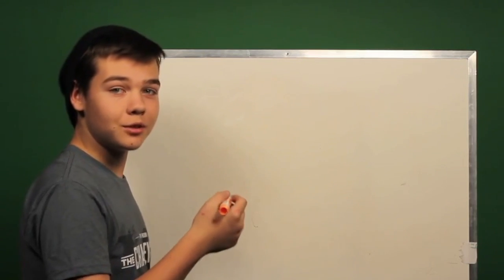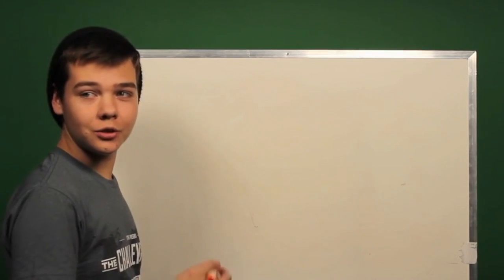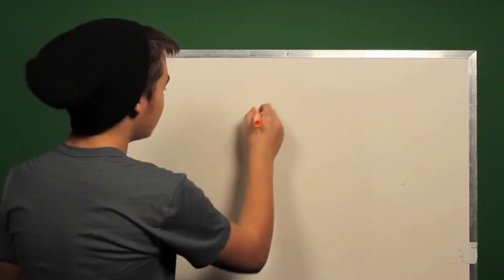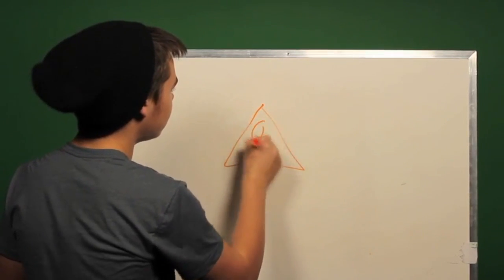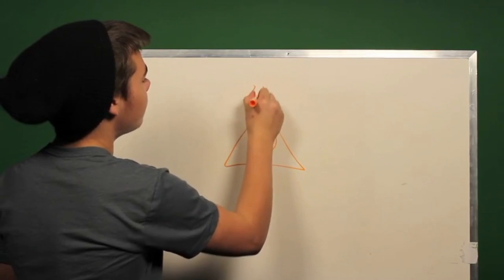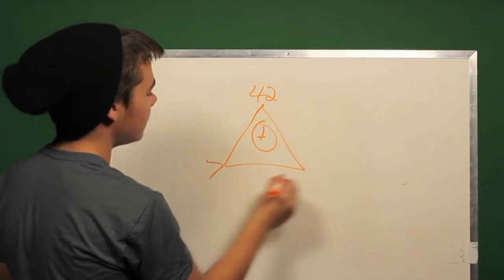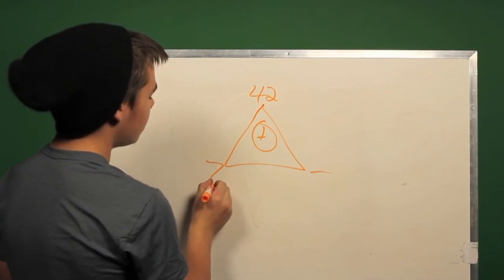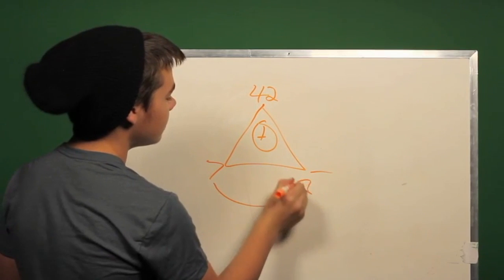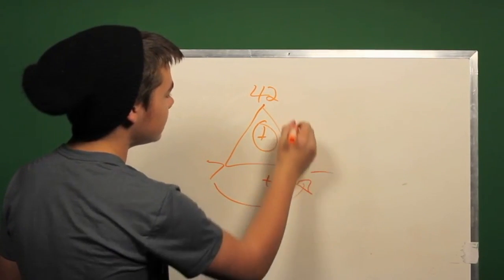And you don't only have to do multiplication triangles. You can also do it with addition and subtraction. So if we draw our triangle here, we have 42 and 7 and our blank. We can do 7 plus blank to equal 42.